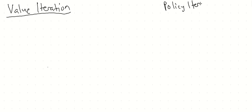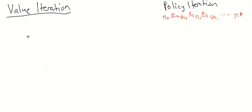The algorithm we're looking at is known as value iteration. To understand what value iteration is doing, let's first look back at policy iteration. What was policy iteration doing? Basically, policy iteration states that we start with some policy pi-zero, we do an evaluation step and get v-pi-zero, then an improvement step and get pi-one, and we continue this until we find an optimal policy pi-star. This was basically what policy iteration was.